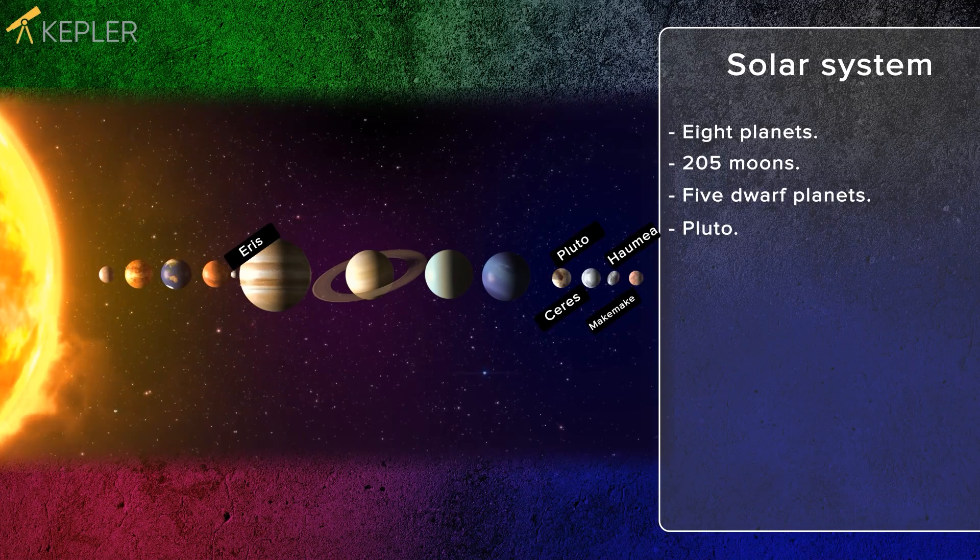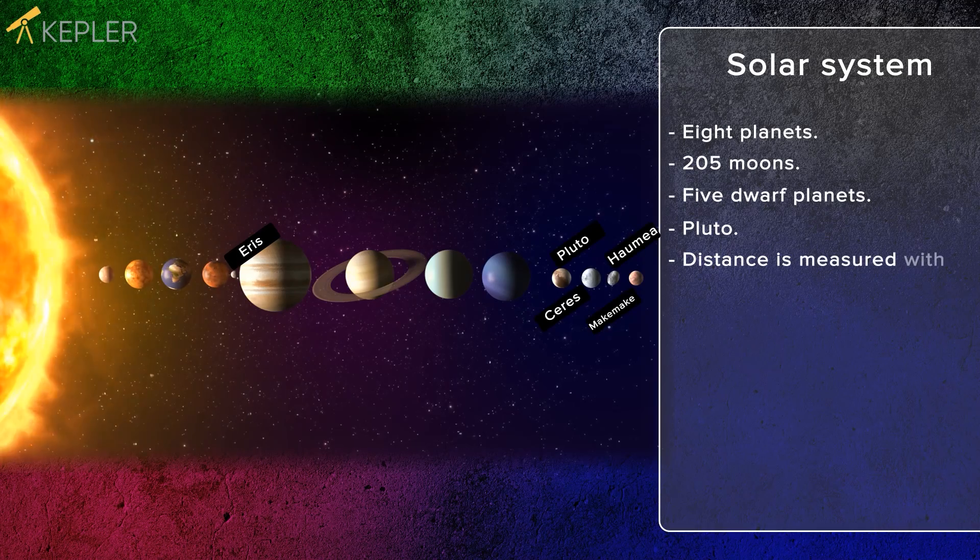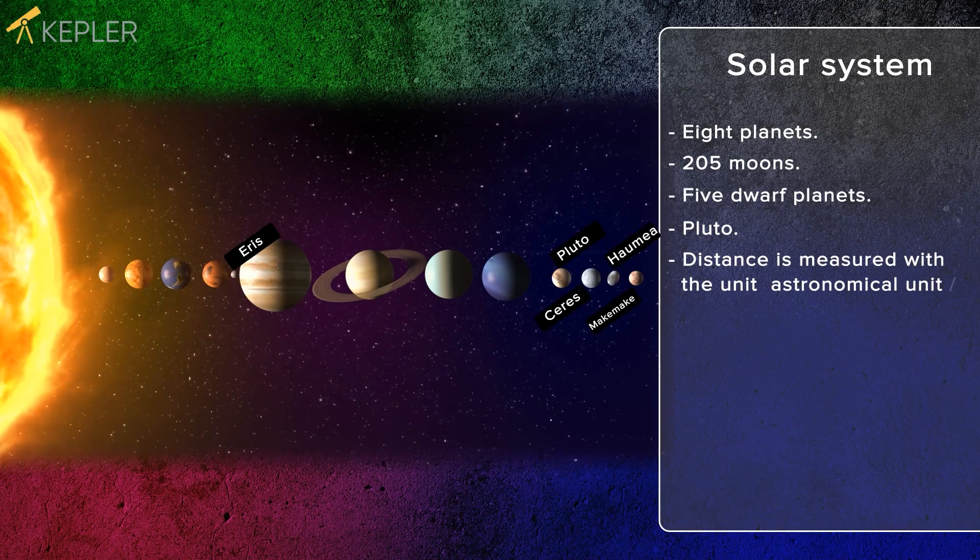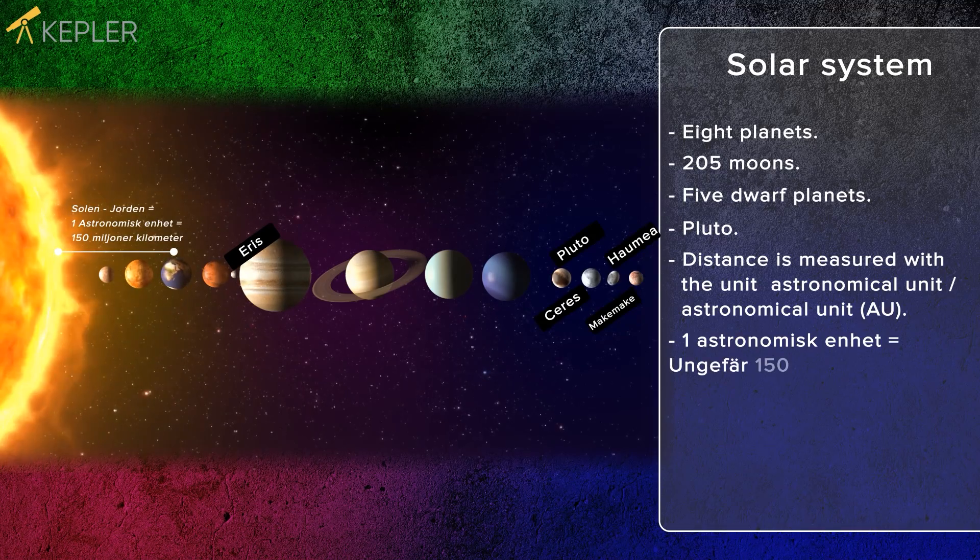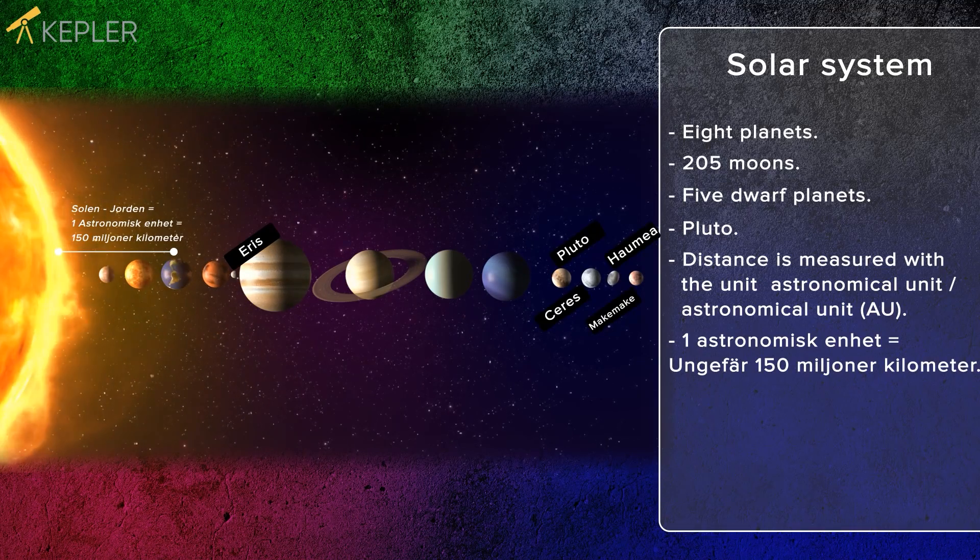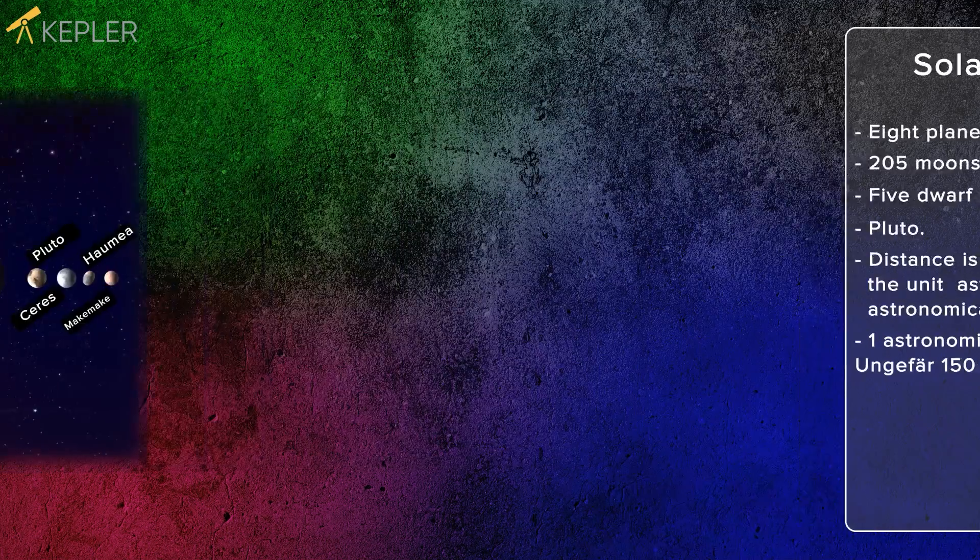To measure distance in space, the astronomical unit, abbreviated AU, is used. Since 2012, one astronomical unit has been defined as approximately 150 million kilometers.